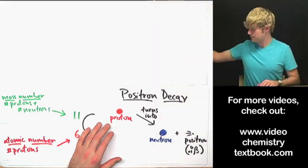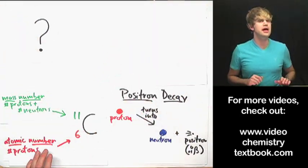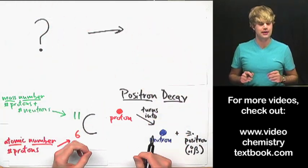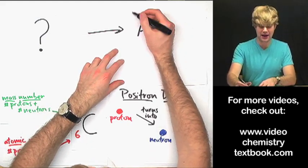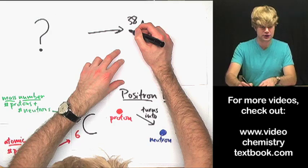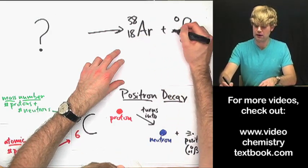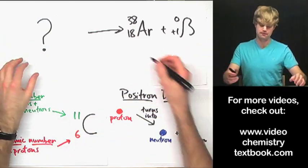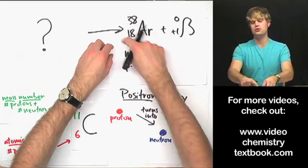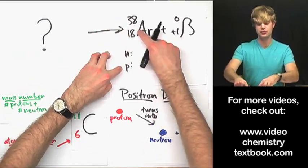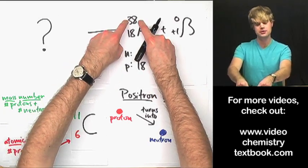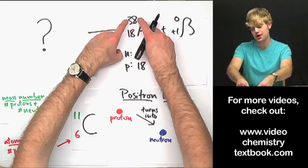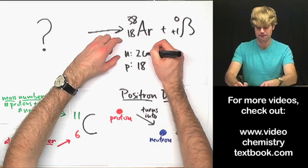Let's do another one. This is going to be different because we're going to start out with a mystery element and figure out what it is. We start with this mystery element, and what we end up getting is an atom of argon-38 and a positron shooting out. So what did I start with? Let's break it down by looking at the neutrons and protons in argon. Protons is easy — it's the atomic number, 18. For neutrons, I do the mass number minus the number of protons, and I get 20 neutrons.